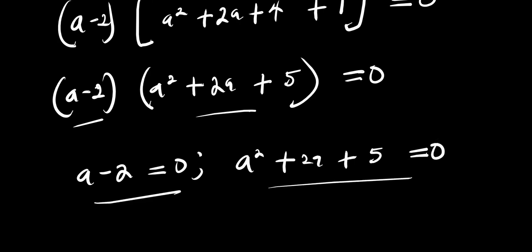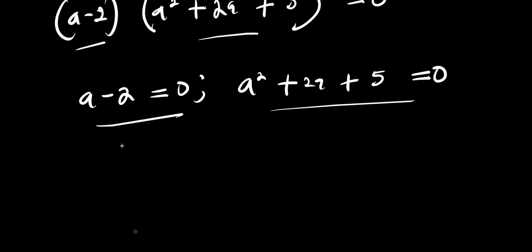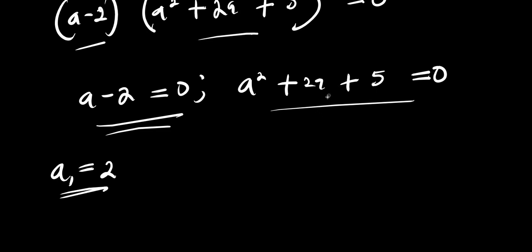Let's solve these individual equations. To solve the first one, a minus 2 equals 0, I have a equals 2. That is my first solution, a₁. To solve the quadratic, I make use of the quadratic formula method.